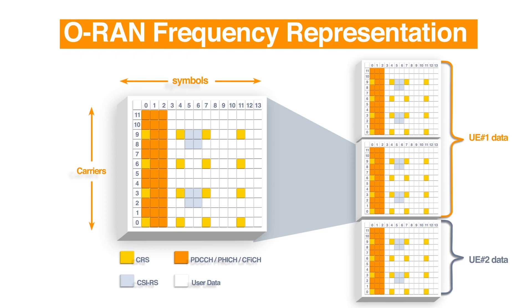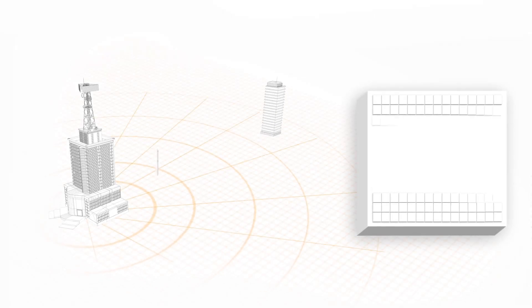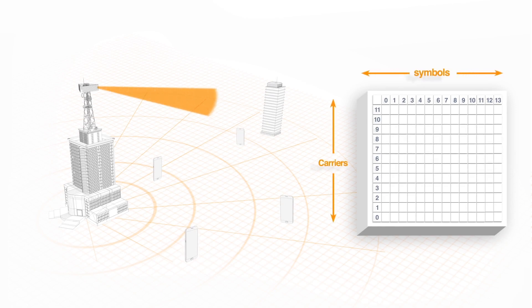Data sections are the fundamental structure which identify the portions of the symbols and portions of resource blocks. The C-plane identifies these data sections, defines them, and tells the RU the operations that it needs to do for these data sections. The IQ data itself is sent on the U-plane. A typical resource block is shown here — some tones are reserved for common reference signals, some for CSI-RS, some for control, and some for user data.